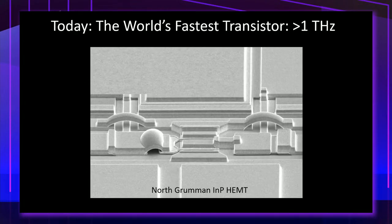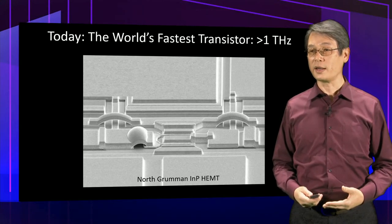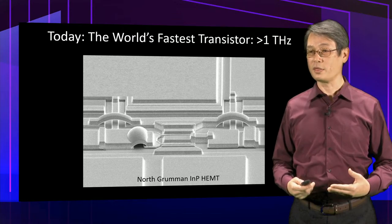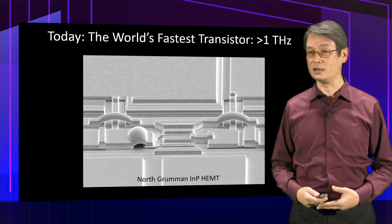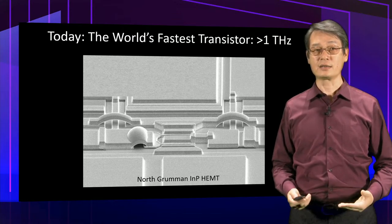It is worth mentioning that today the world's fastest transistor is made from compound semiconductor, with a frequency response greater than 1 terahertz — that is 1,000 gigahertz — incredibly fast.